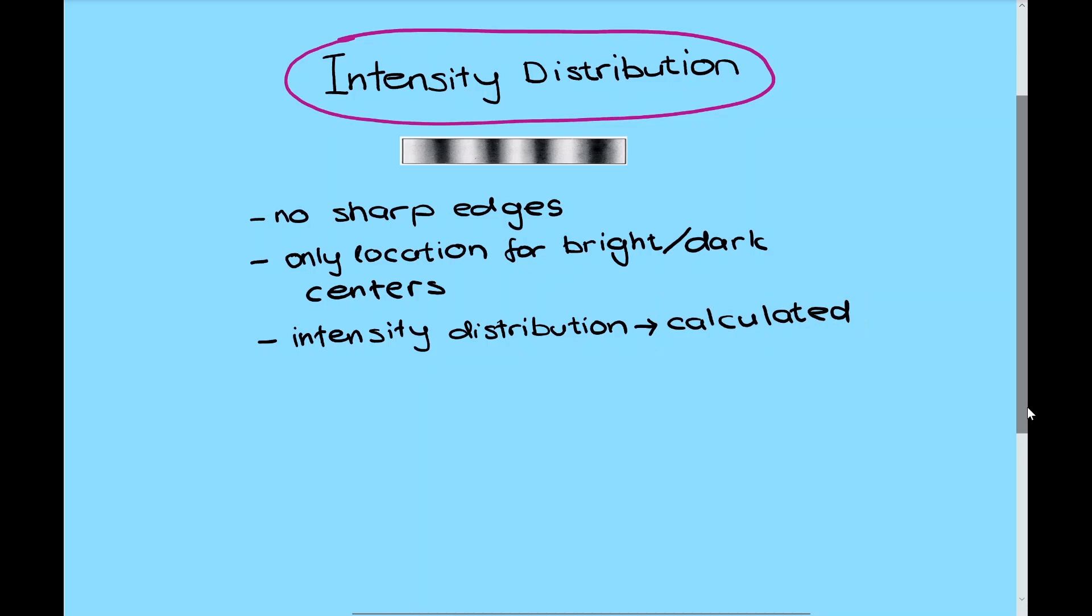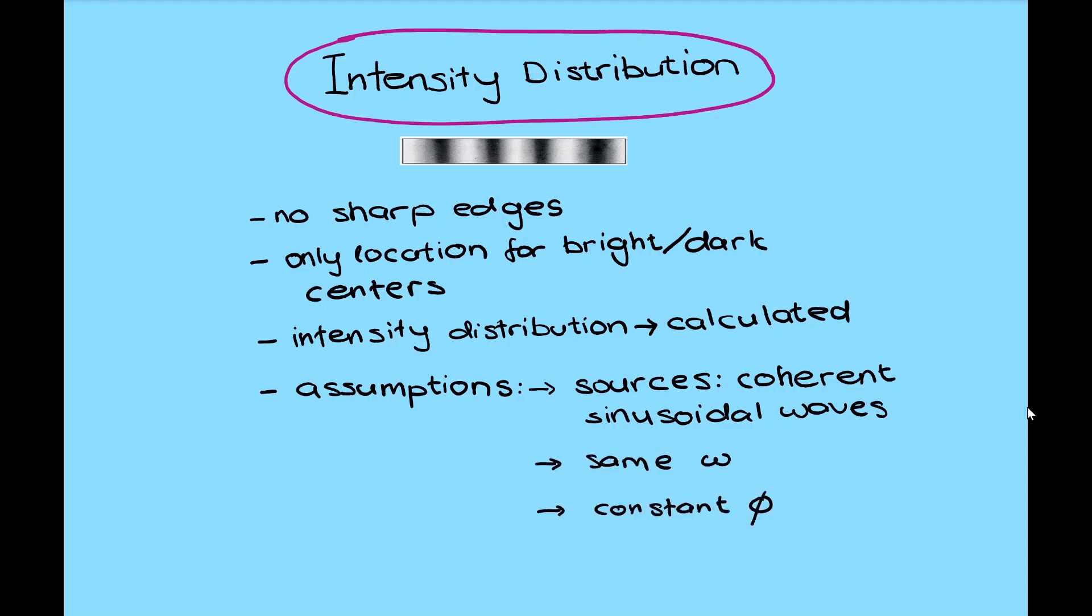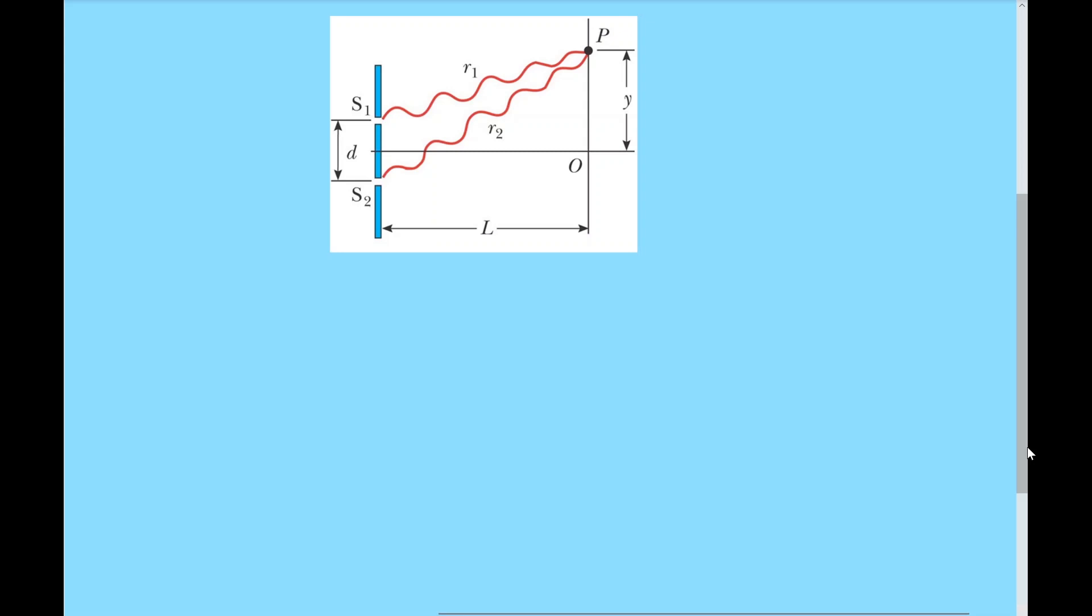From our previous assumption that the source must be coherent, therefore they must have the same frequency omega, as well as constant phase phi. Let us assume that the wave from top slit carrying this property e1 reached the point p. The other wave from the bottom reached a bit later, represented by this e2. At point p, the total is given by e1 plus e2.